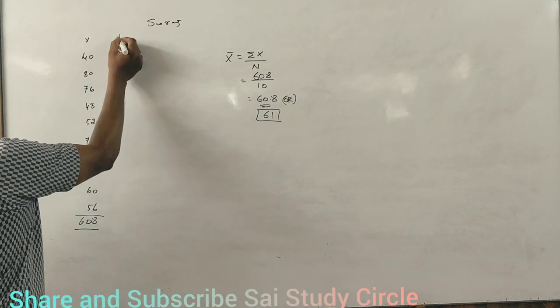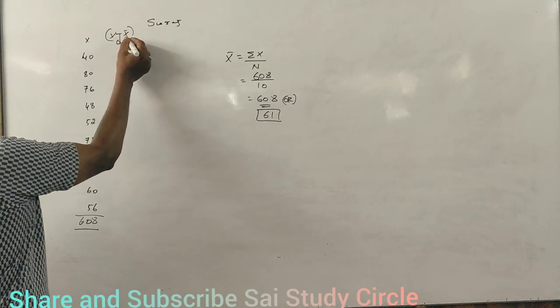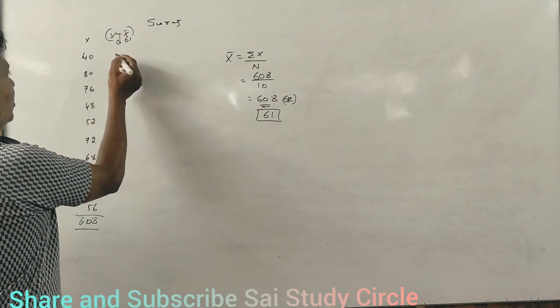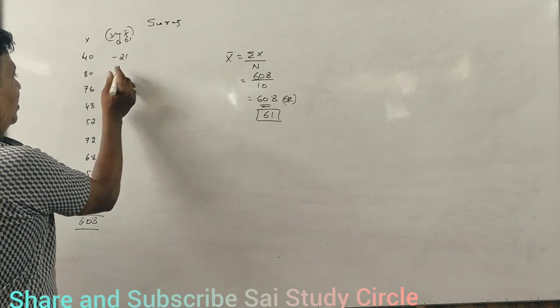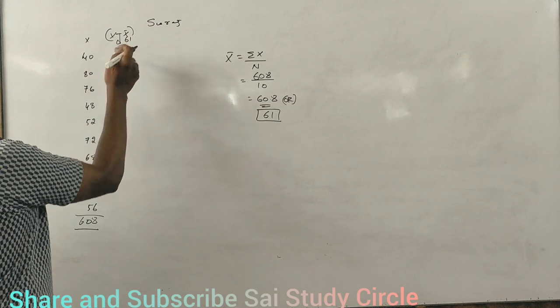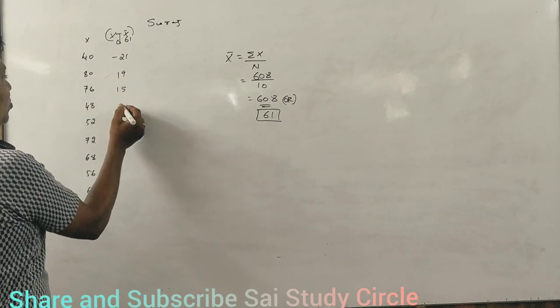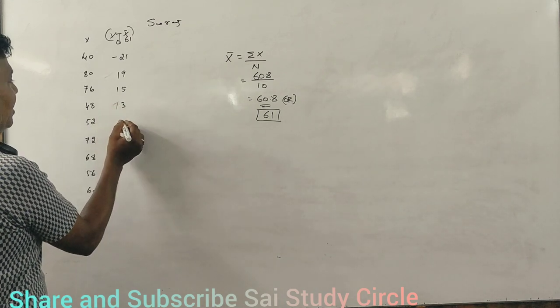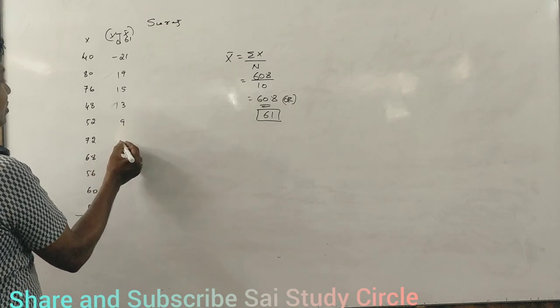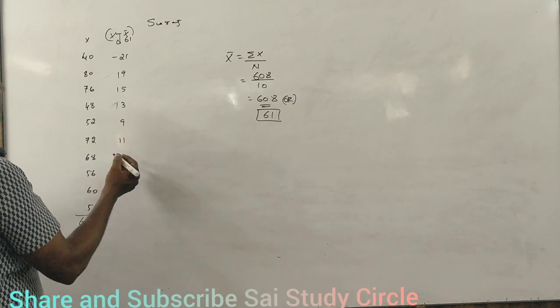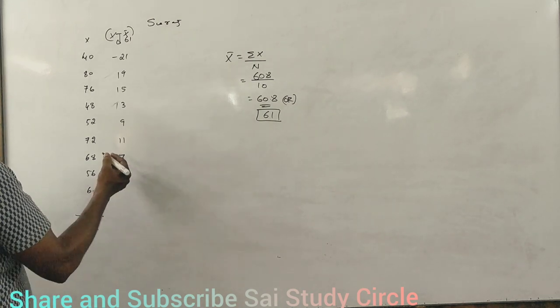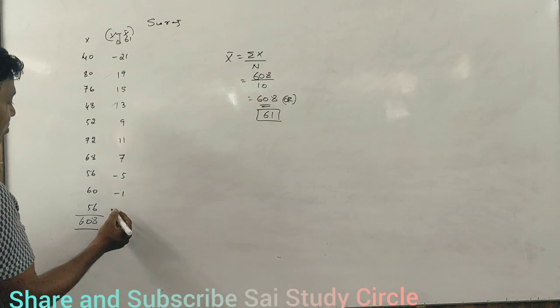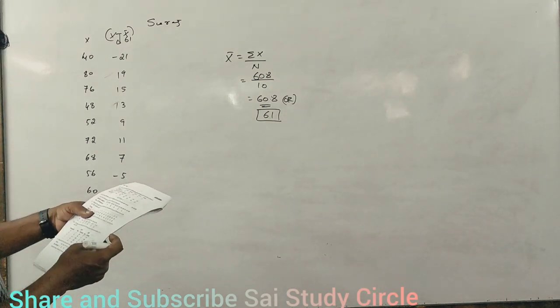D is x minus x mean. This is individual series. 40 minus 61 is equal to minus 20. This is plus 19. 76 is equal to 15. 48 equals minus 13. 52 equals minus 9. 72 equals 11. 68 equals 7. 56 equals minus 5. 60 equals minus 1. 56 equals minus 5, which is minus 2.